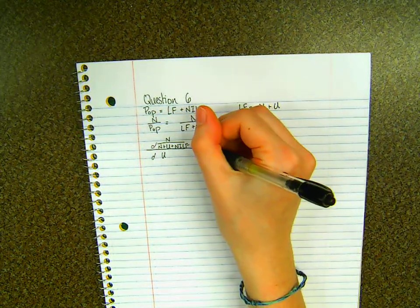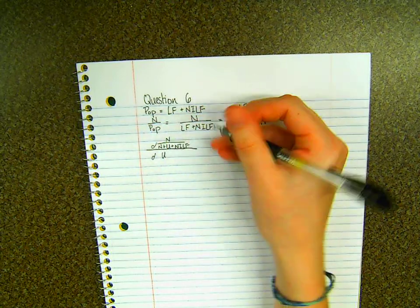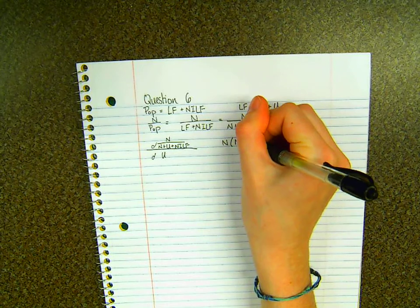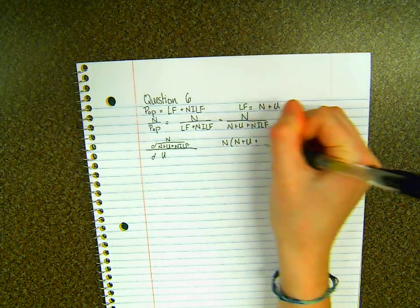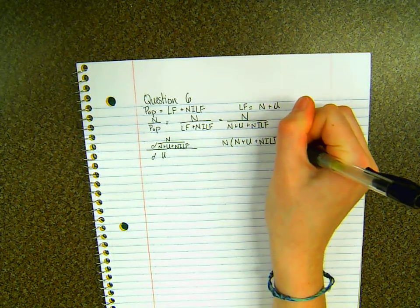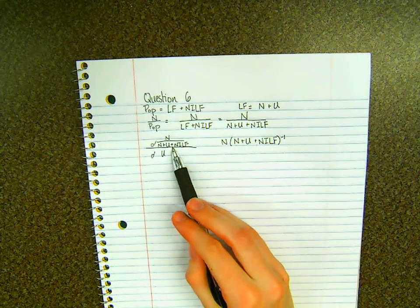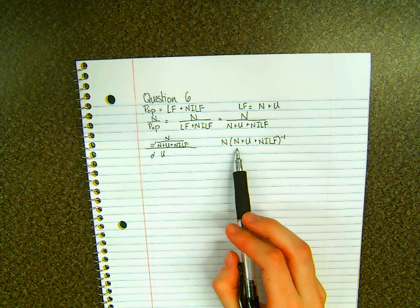Now I think to make this a little bit easier, it helps if we can set the top part of that derivative as N times N plus U plus those not in the labor force to the negative one. So that just means that it's on the bottom of the fraction, so you can approach this like a chain rule.